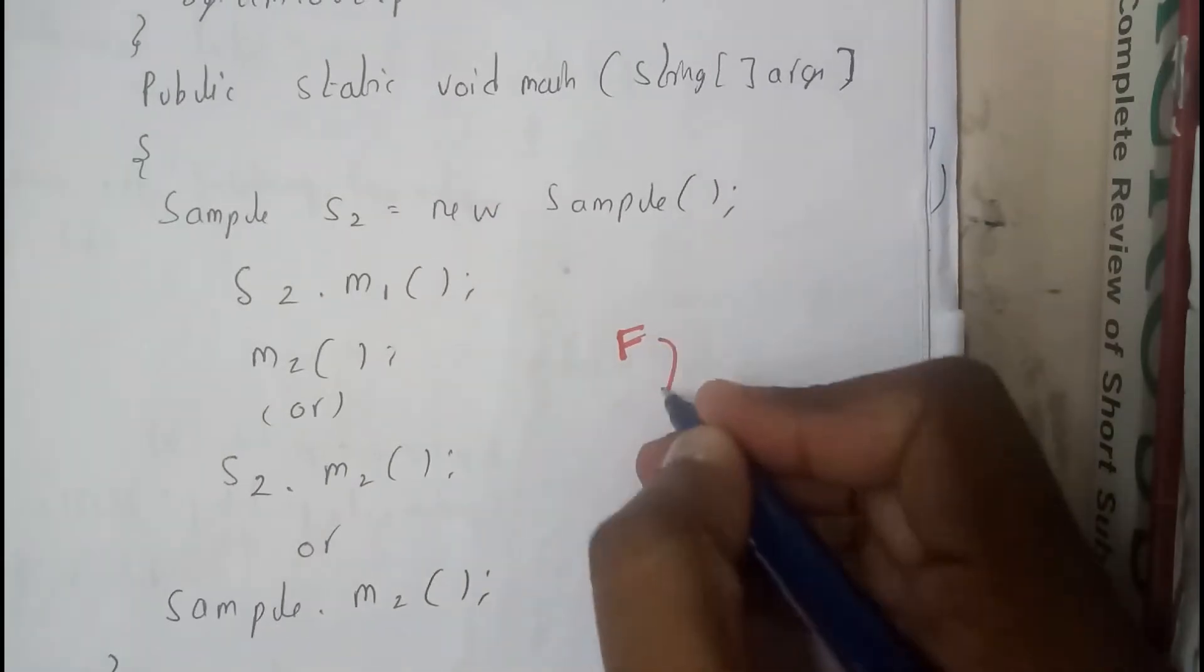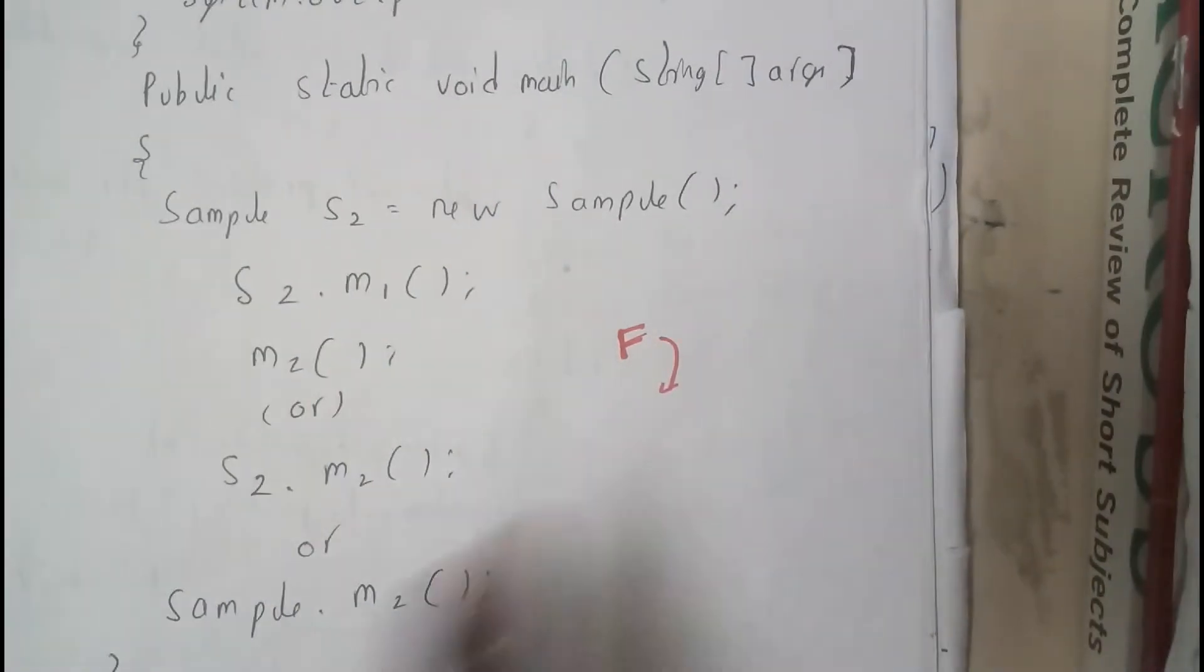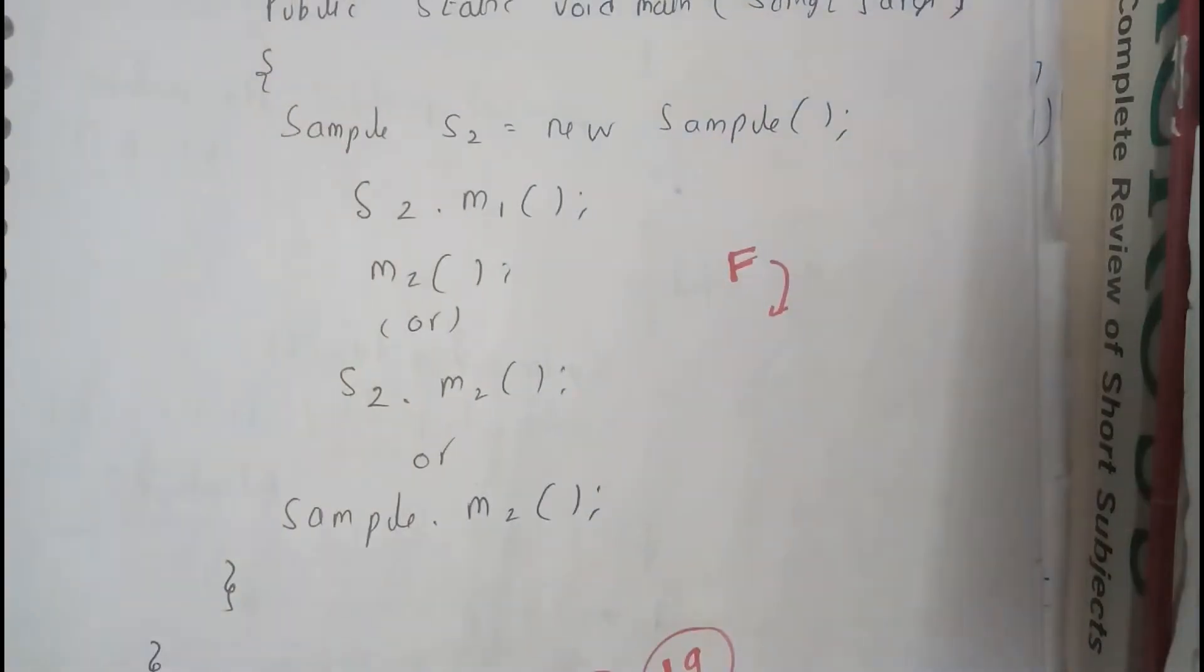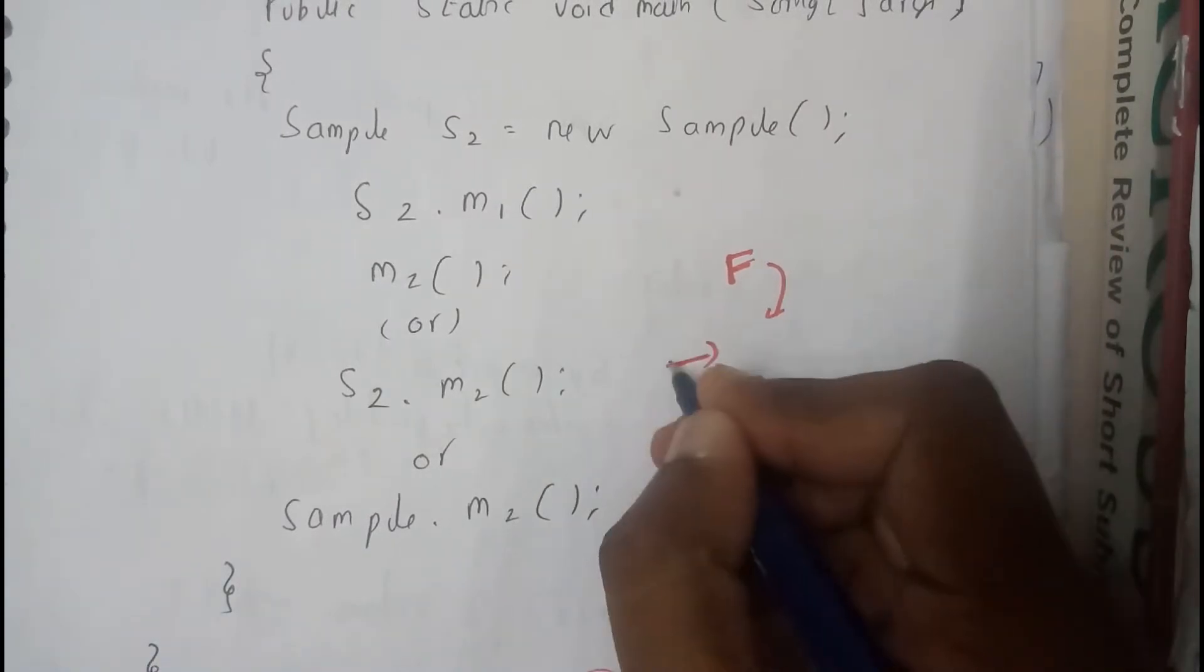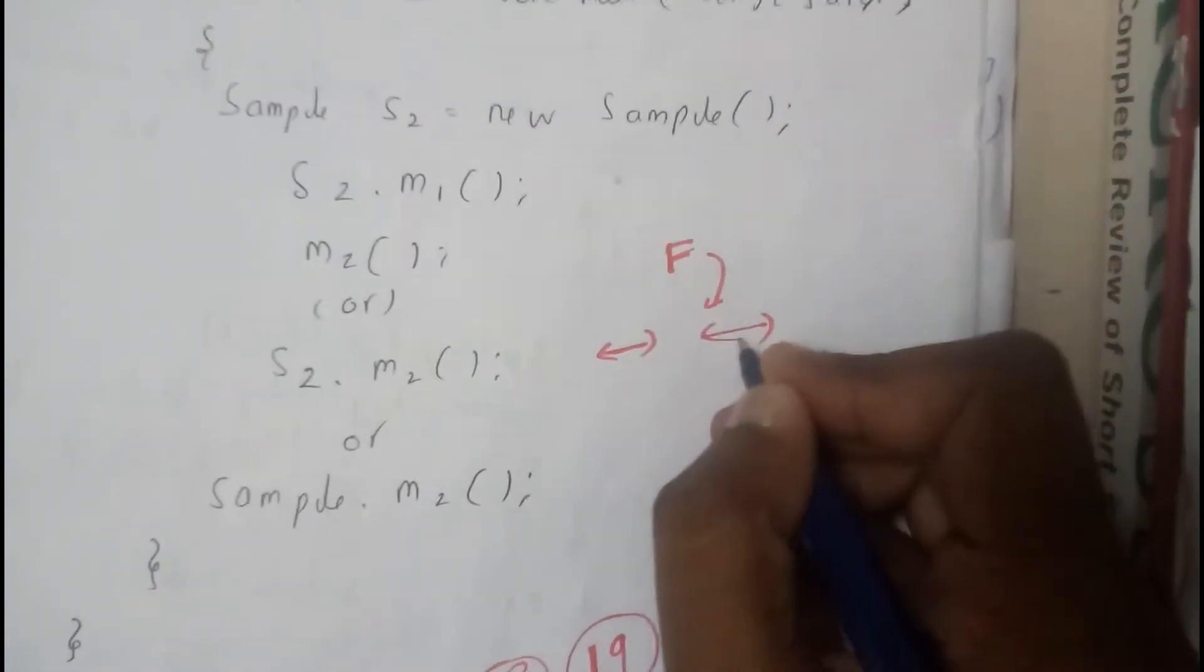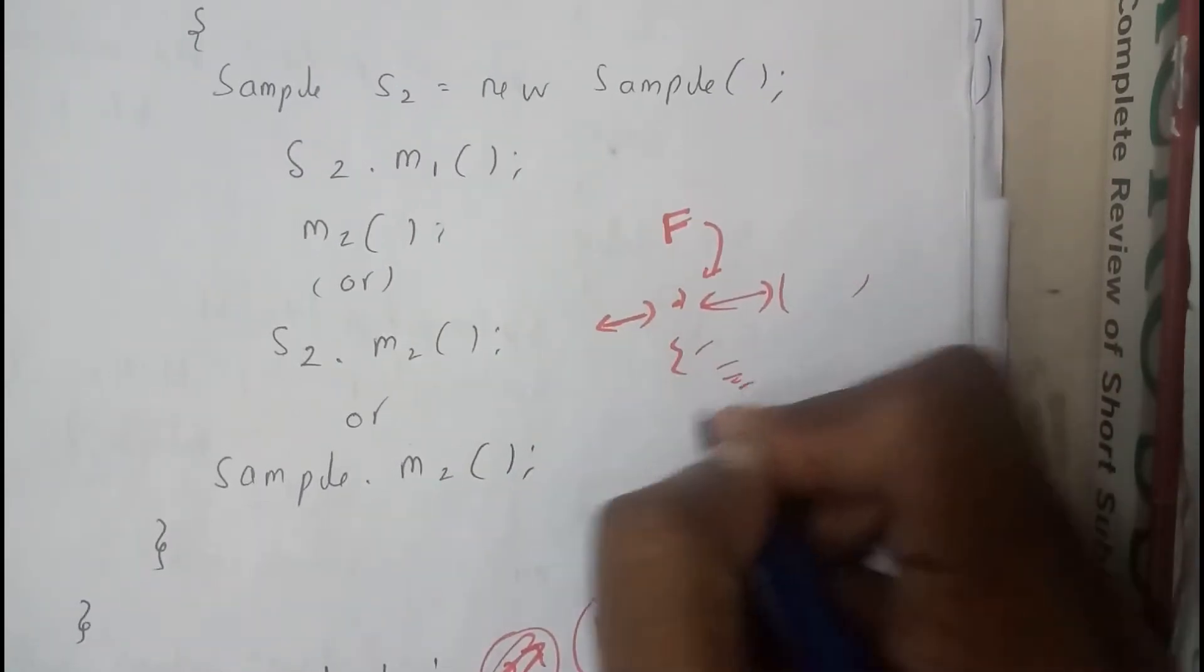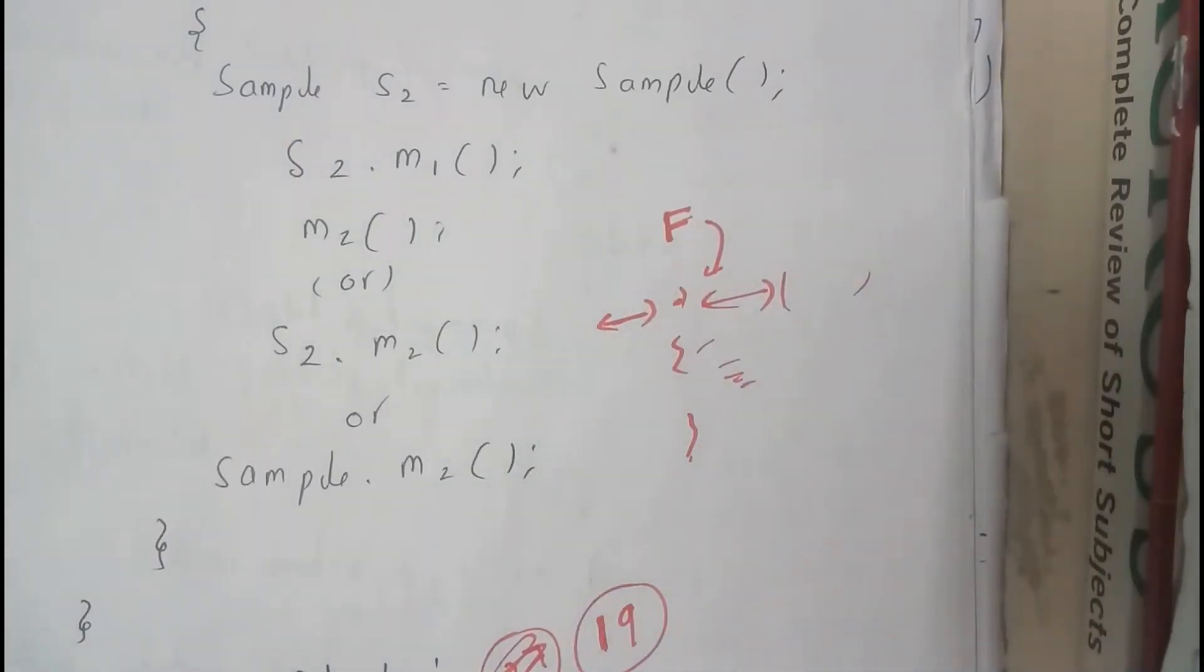Final methods will be used with the keyword final, with the method return type and method name with parameters if required, and a code. That code will be always constant. You cannot update it according to your requirement.